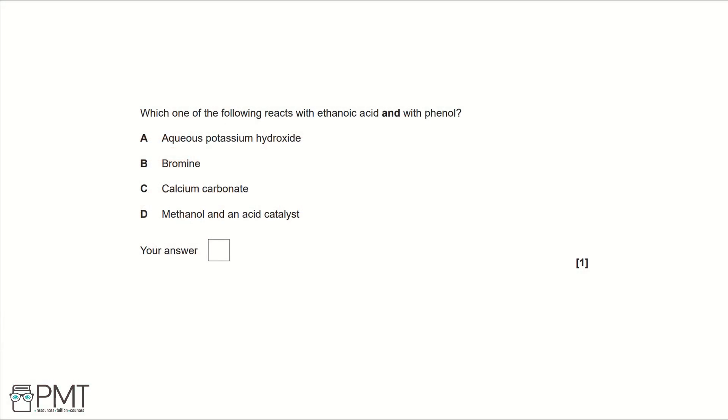Which of the following reacts with ethanoic acid and with phenol? A: aqueous potassium hydroxide, B: bromine, C: calcium carbonate, or D: methanol and an acid catalyst. In this question, we need to find what reacts with both ethanoic acid and phenol. If we draw out both of these, we have a two-carbon chain with a carboxylic acid group, and we have a benzene ring with an OH group attached.